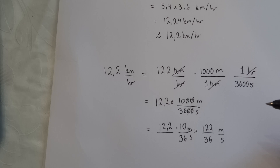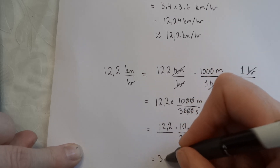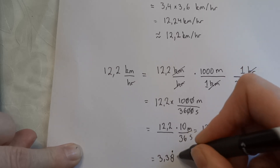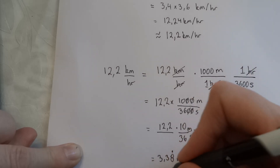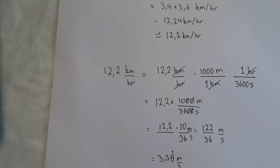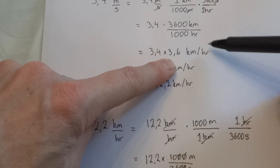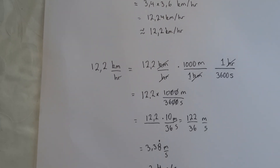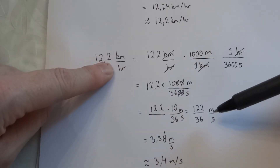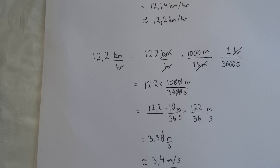No big surprises here that we should get exactly the same value as we started with. And that's how we can convert units. We end up multiplying meters per second by 3.6 to get kilometers per hour. And to get from kilometers per hour to meters per second, we divide by 3.6 — or equivalently multiply by 10 and divide by 36.